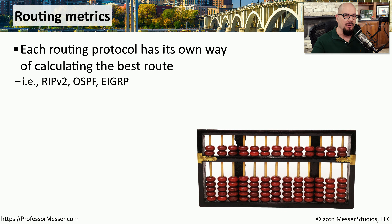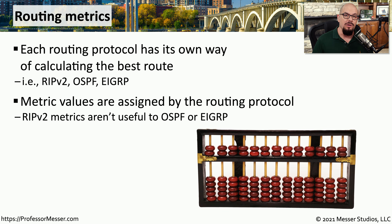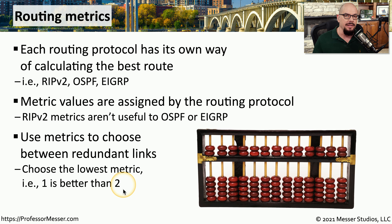If you configure a dynamic routing protocol, it's up to the protocol to determine what the best route might be, and different protocols have different ways of making this determination. If you configure a router with RIP version 2, OSPF, or EIGRP, you may notice differences between the routing tables for each of those protocols. The way routing protocols grade or rank different routes is by using a metric. Each routing protocol has its own method of calculating metrics, so RIP v2 metrics differ from OSPF and EIGRP. These metrics are useful when there are redundant routes — multiple ways to get from point A to point B. Generally, a lower metric value is better; a metric of 1 is better than a value of 2.